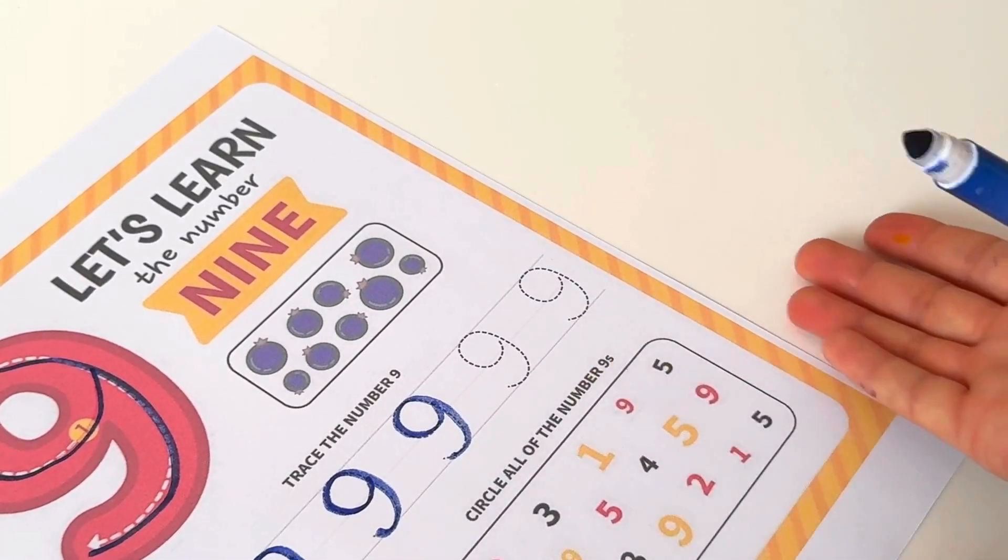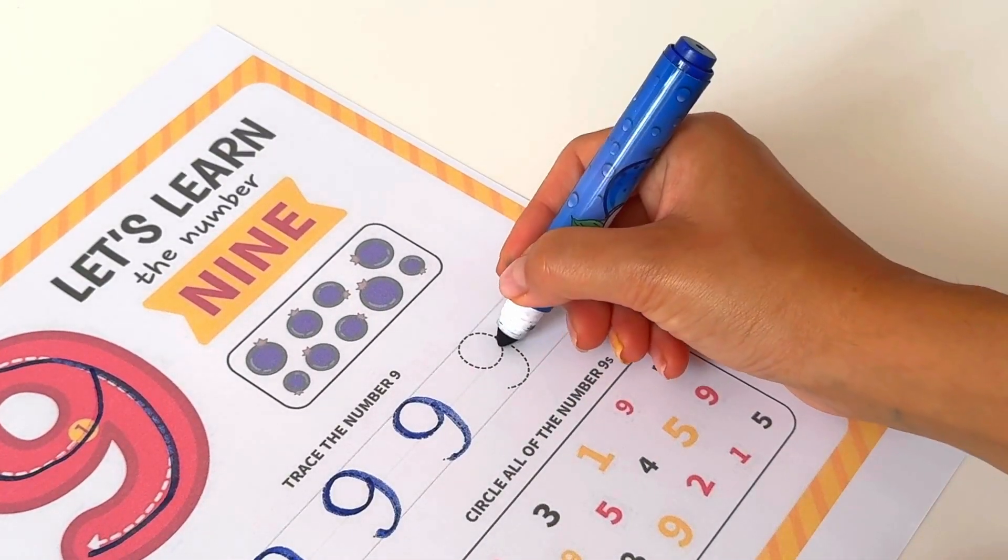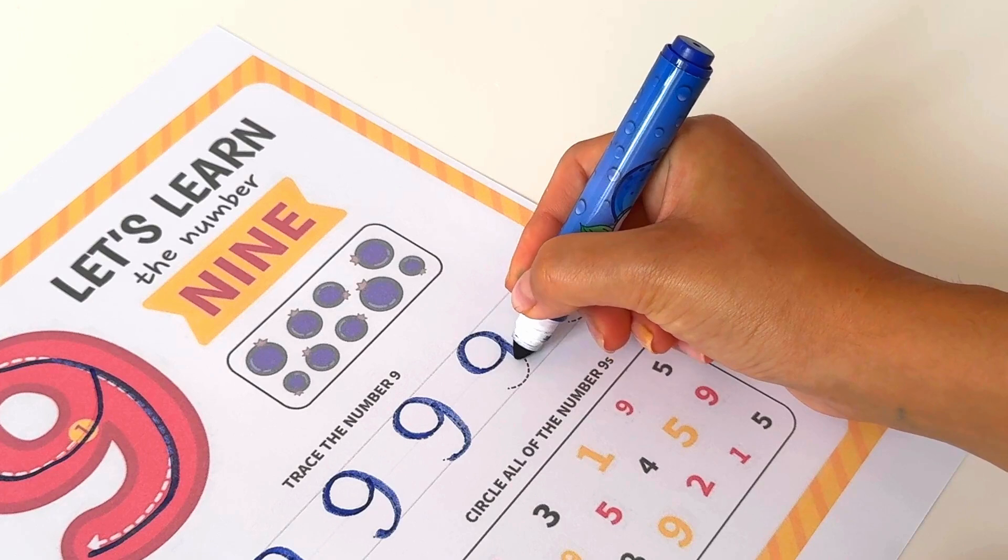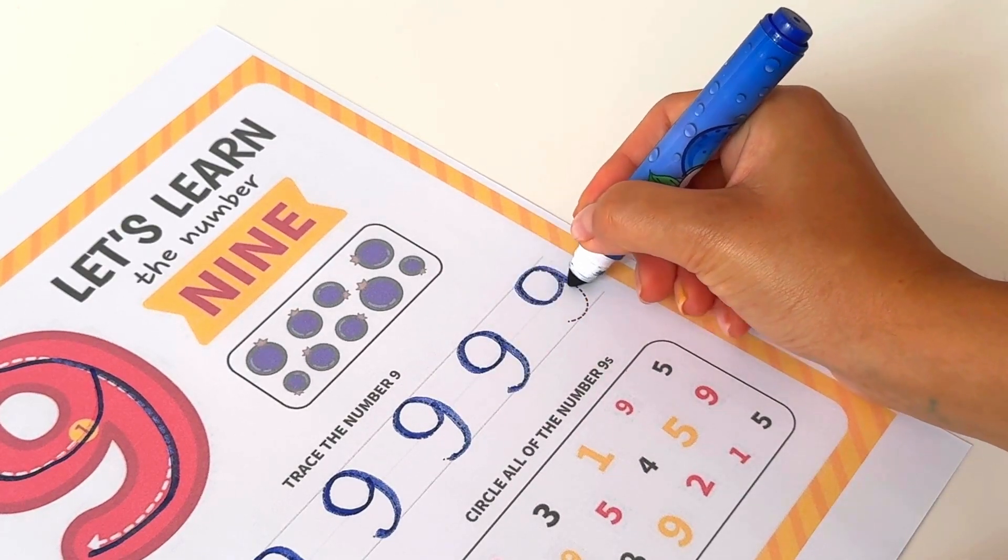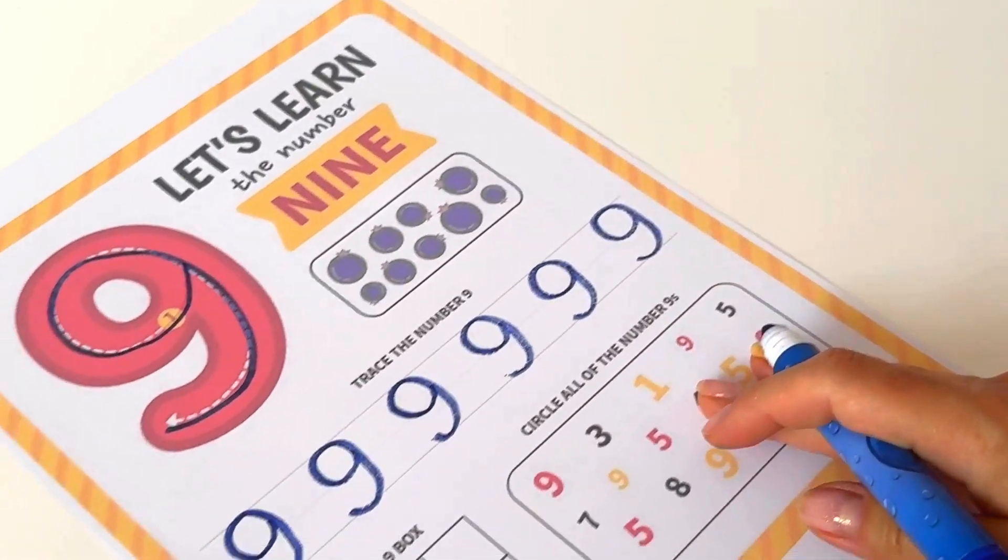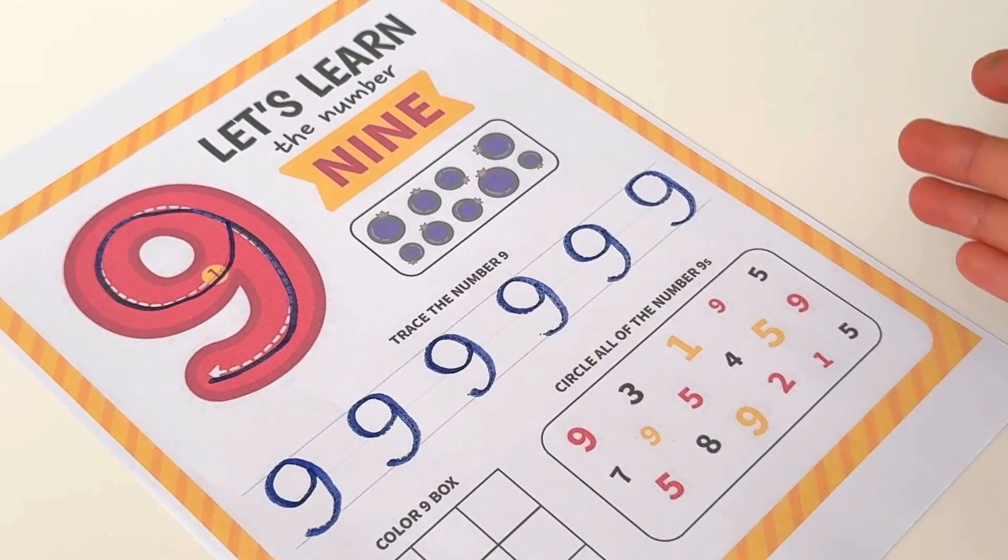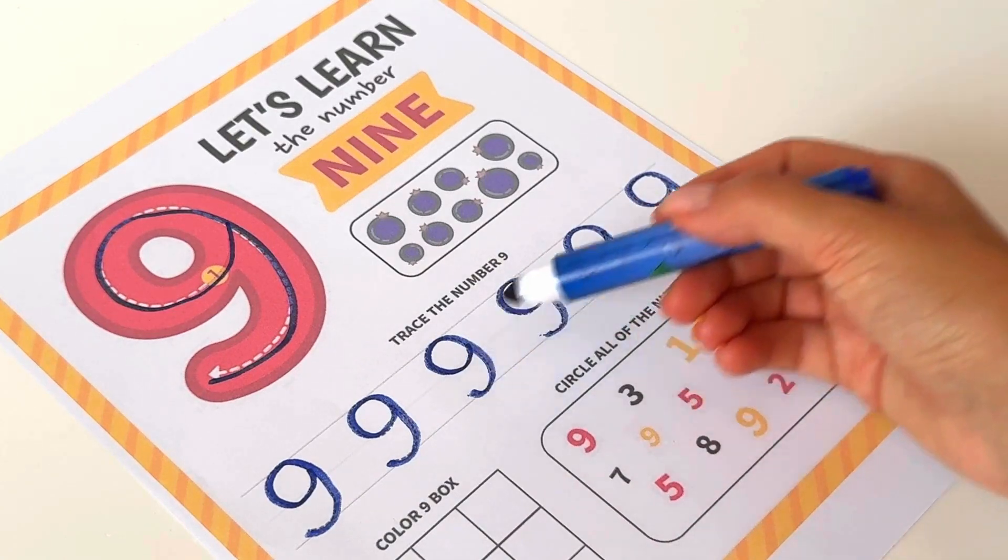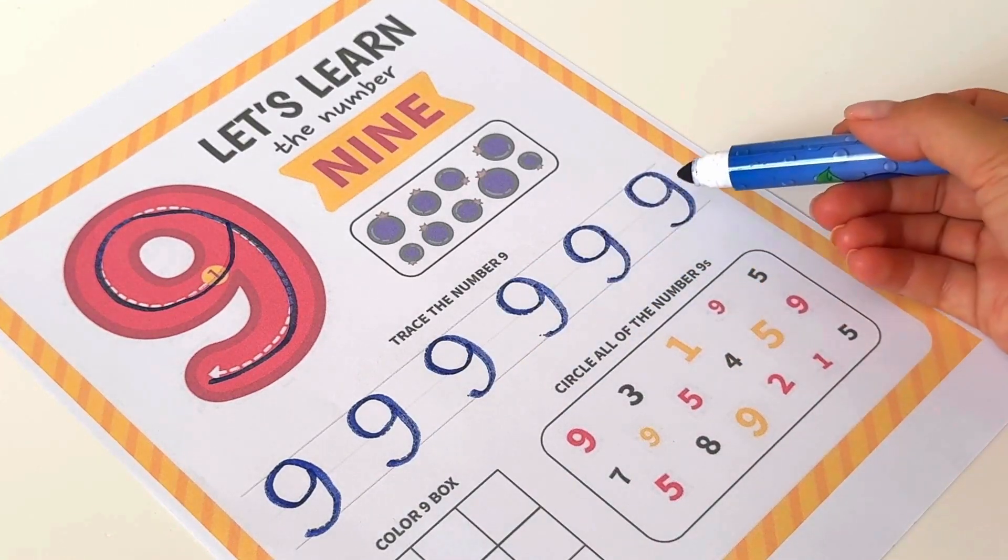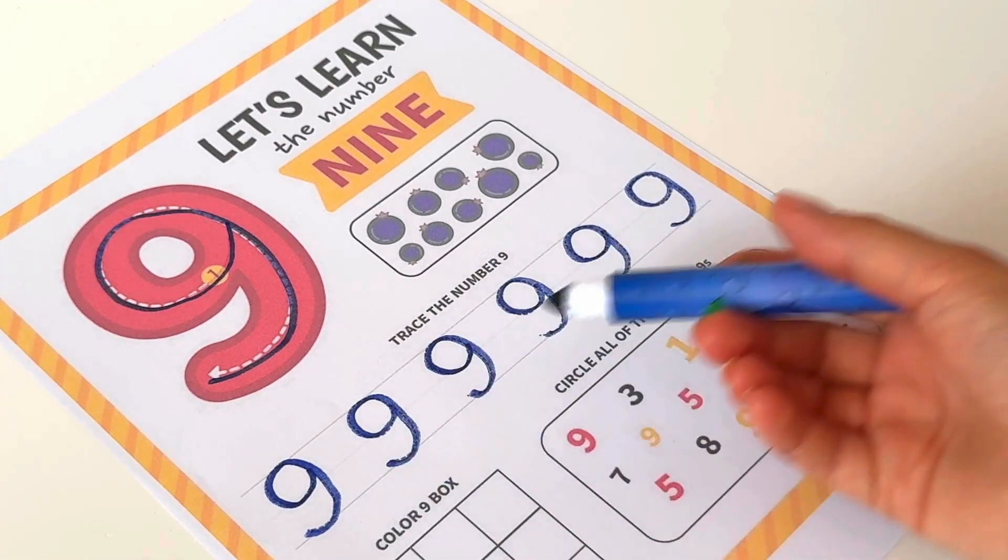Practice makes it perfect. We have just two more. One more left. Wow, we finished all our number nines. Let's count them. One, two, three, four, five, six. We have six of number nine.